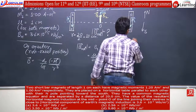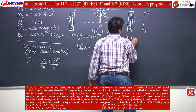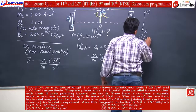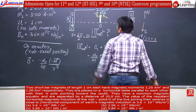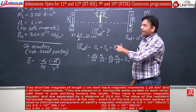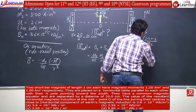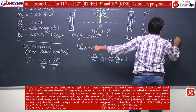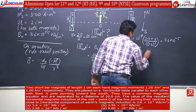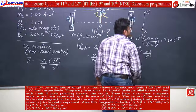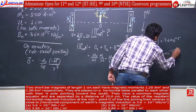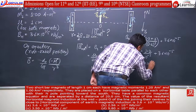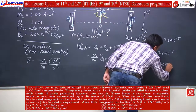Putting in all values: B = (μ₀/4π)(m1/r³) + (μ₀/4π)(m2/r³) + BH. Note that μ₀/4π = 10⁻⁷, m1 and m2 are 1.2 and 1.0, and the distance must be in SI units, so r = 0.1 m, giving r³ = 10⁻³. This gives: 10⁻⁷ × 2.2 / 10⁻³ + 3.6 × 10⁻⁵ = 2.2 × 10⁻⁴ + 3.6 × 10⁻⁵.